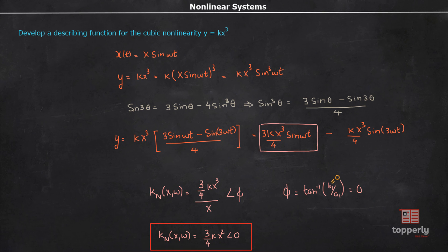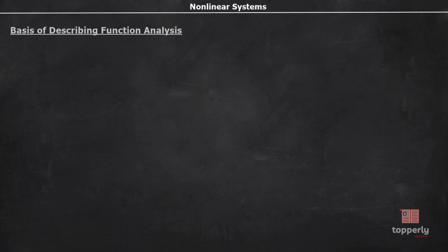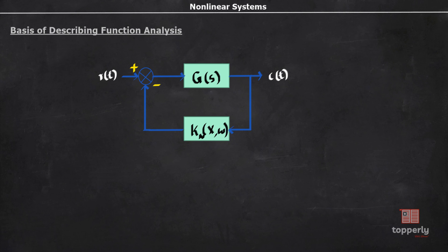Next we will see how to use the describing function to analyze nonlinear systems. We arrange the nonlinear system such that all the linear components are represented using a block G(s) — this G(s) may be the reduction of a more complex multi-loop system — and all the nonlinear elements are described by a single describing function Kₙ(x, ω). An important thing to note is that the feedback here is negative.